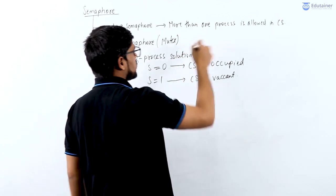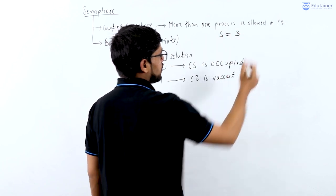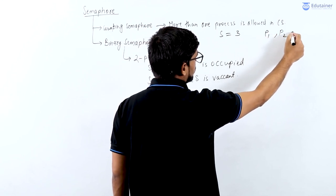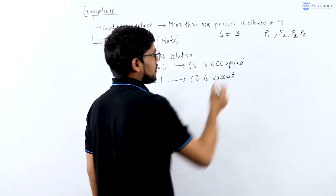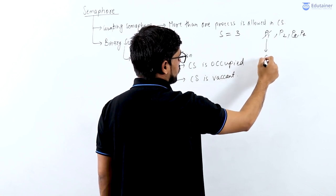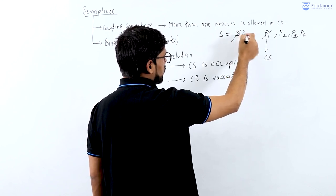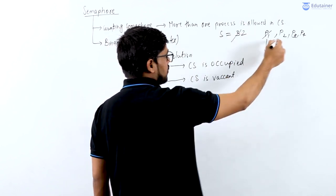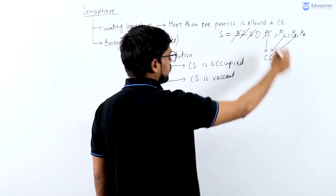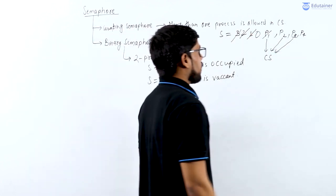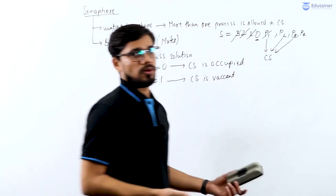In a counting semaphore, let's say the value of s is 3. Suppose processes P1, P2, P3, and P4 are all trying to enter the critical section. Process P1 gets a chance to enter and decrements s by 1. Then P2 gets a chance and decrements it by 1. Then P3 gets a chance and decrements it by 1. Now the value of s is 0, meaning no other process is allowed to enter the critical section.